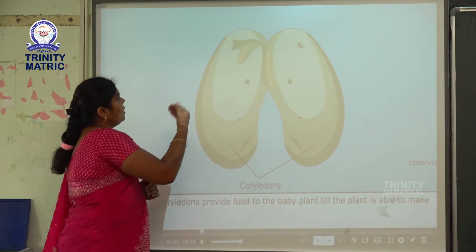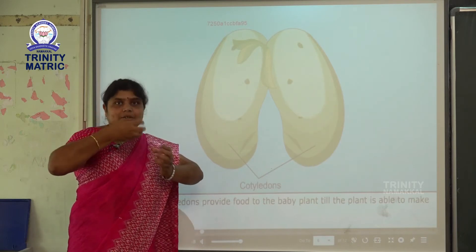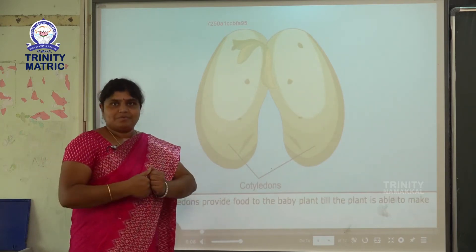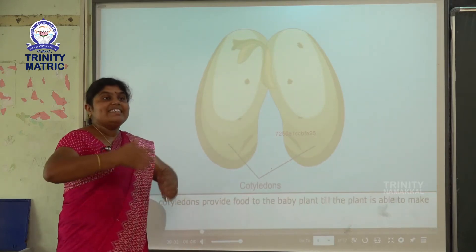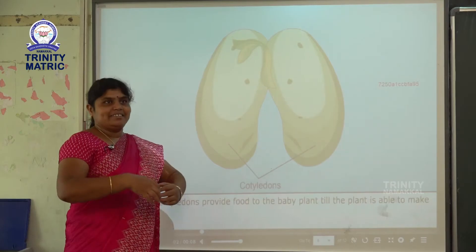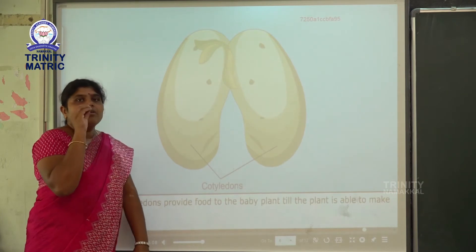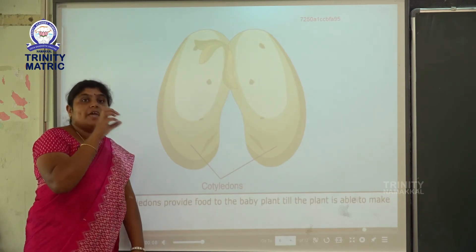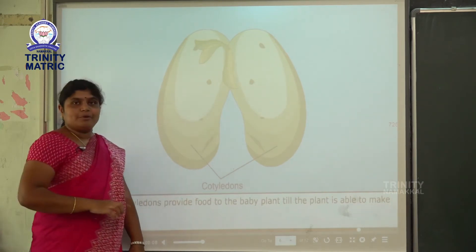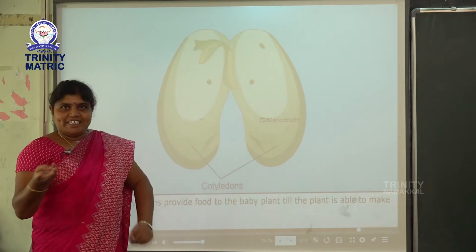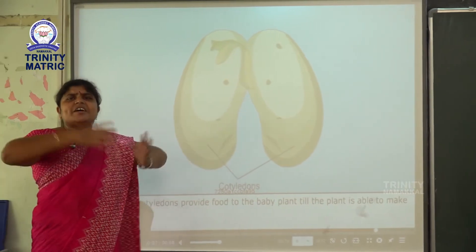We have seen more endosperms in our life. For example, nuts, cashew nuts, walnuts, and almonds — these are endosperm seeds. What is the function of endosperm? The endosperm gives food to the baby plant. The nutrients present in the endosperm include carbohydrates, fat, vitamins, minerals, and fibers — everything is present inside the endosperm of the seed.